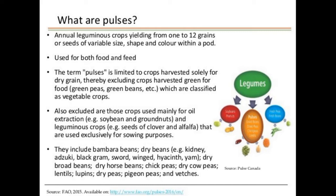Pulses include Bambara beans, dry beans such as kidney, adzuki, black, brown, wind, hyacinth and yam beans, dry broad beans, dry horse beans, chickpea, dry cow peas, lentils, lupins, dry peas, pigeon peas and vetches.